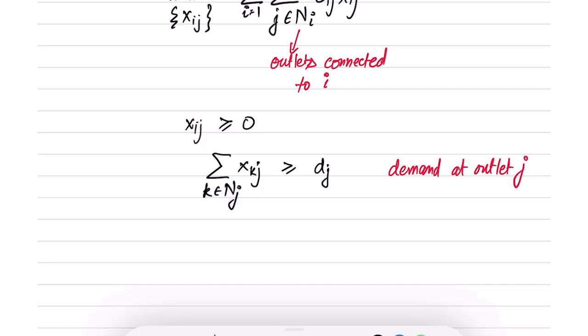This is the demand at outlet j. The total quantity shipped to outlet j from any of the warehouses k should be greater than or equal to the demand. At least I should satisfy the demand, and I could ship more, but I do have to satisfy the demand.